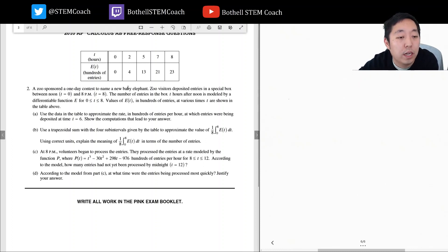A zoo sponsored a one-day contest to name a new baby elephant. Zoo visitors deposit entries in a special box between noon. The number of entries in the box t hours after noon is modeled by the differentiable function e. For zero less than or equal to t less than or equal to eight, values of e of t in hundreds of entries at various times are shown in the table above.